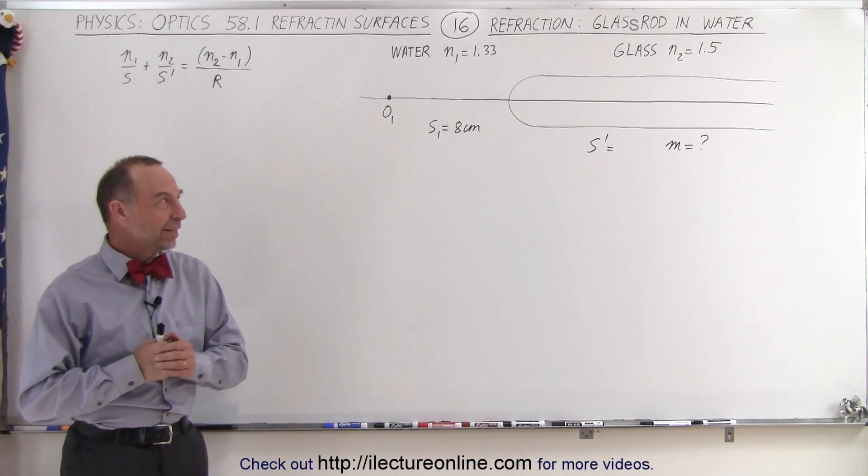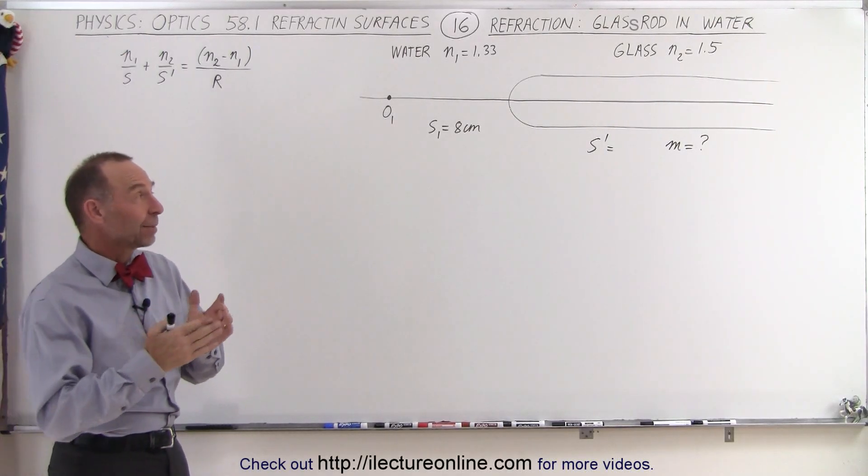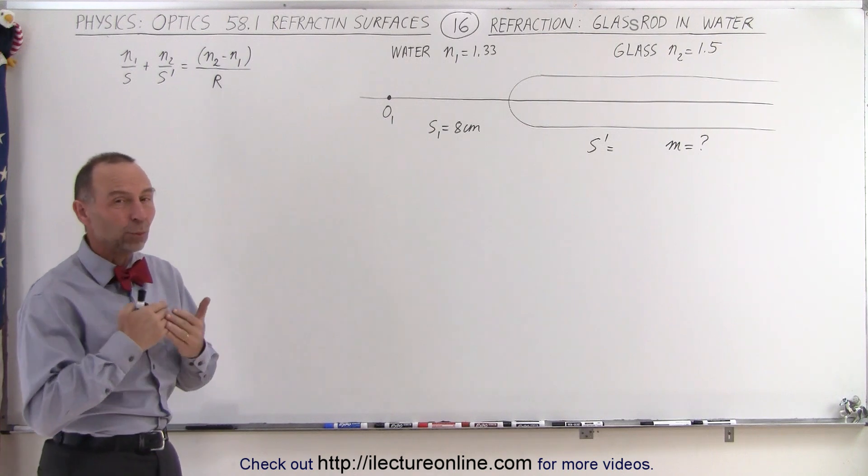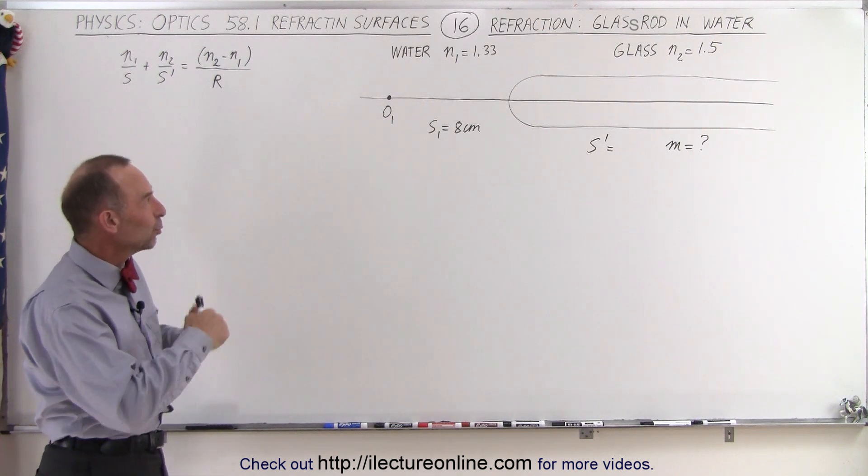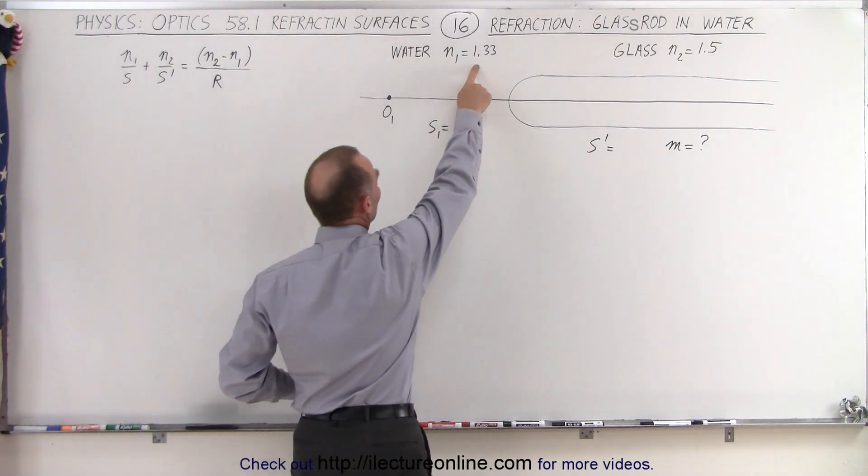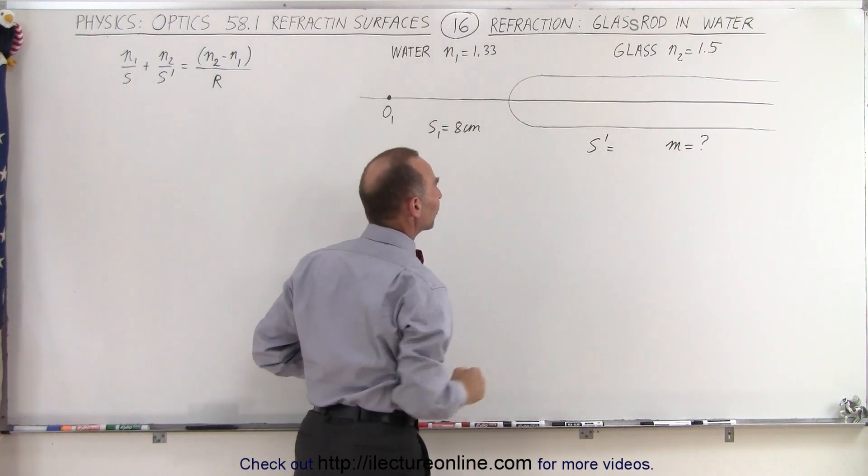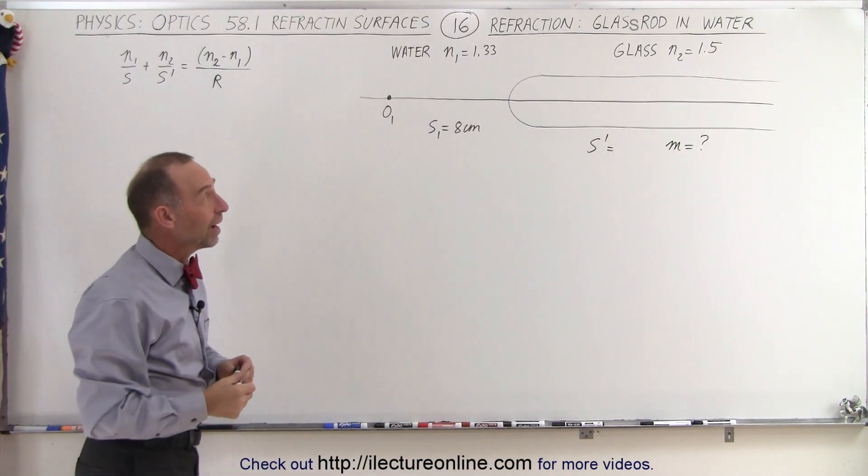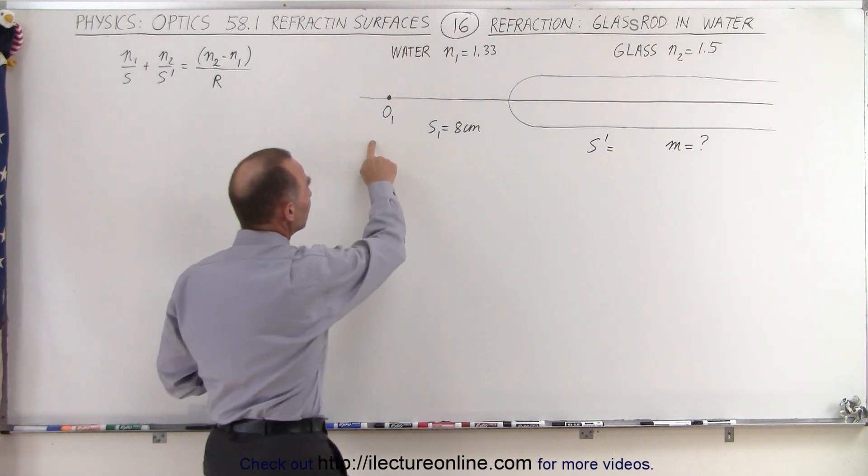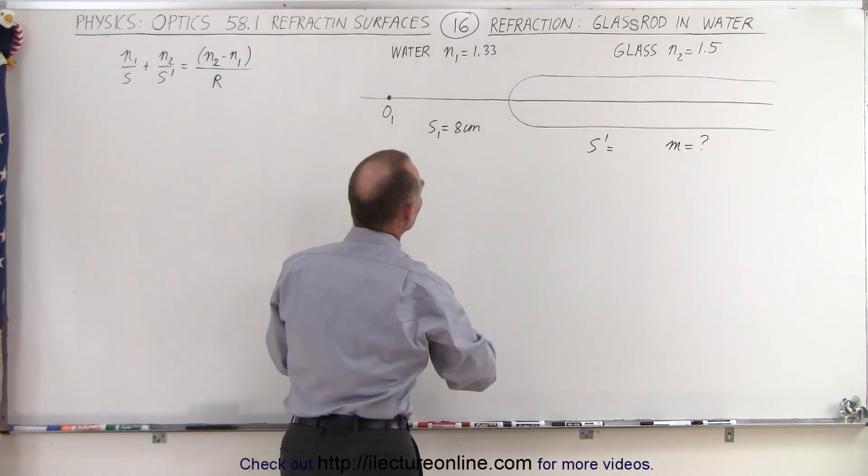Welcome to ElectronLine. Now here we have the same rod that we had before, but instead of being in air, it's now placed in water where the index of refraction is 1.33. The index of the rod is still 1.5. Again we place an object 8 centimeters away from the boundary.